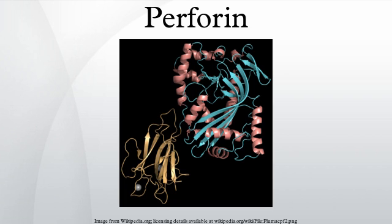Upon degranulation, perforin binds to the target cell's plasma membrane and oligomerizes in a Ca2+-dependent manner to form pores on the target cell. The pores formed allow for the passive diffusion of a family of pro-apoptotic proteases, known as the granzymes, into the target cell.